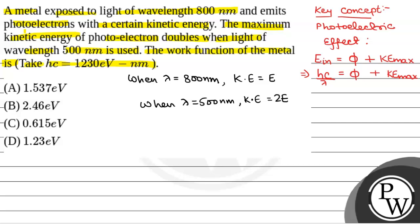So from here, we will have in the first case, we have energy incident that will be equal to Hc by lambda. We will call it as E1, that is energy incident in first case, that will be 1230 by 800 nanometer. And in the second case, E2 will be equal to 1230 by 500 nanometer.